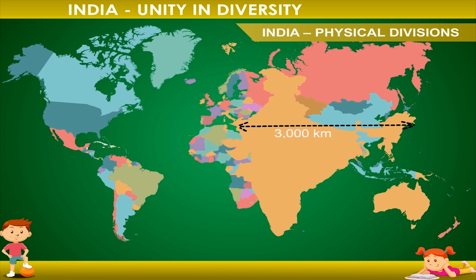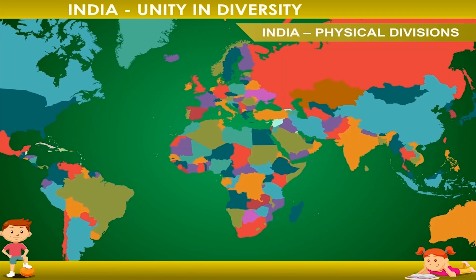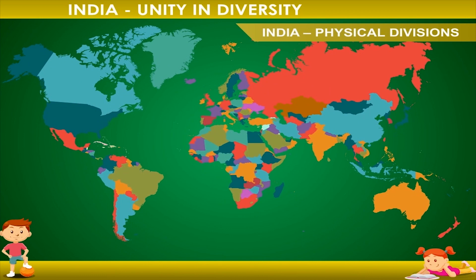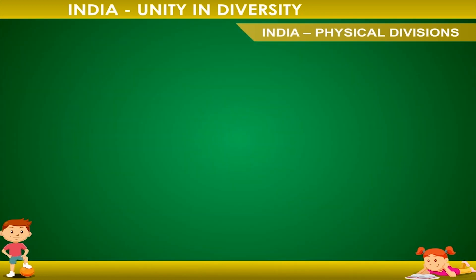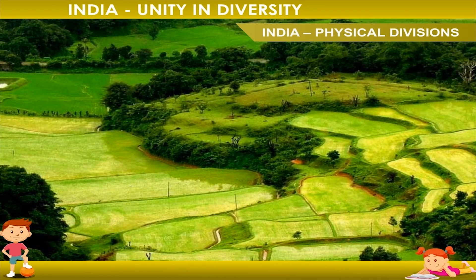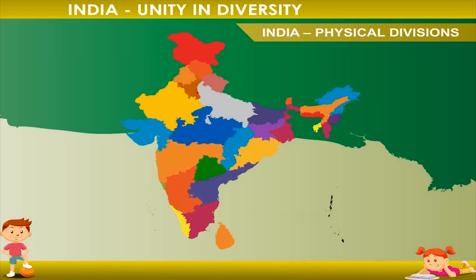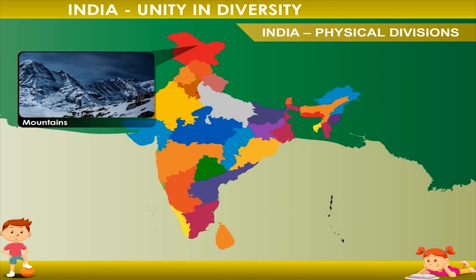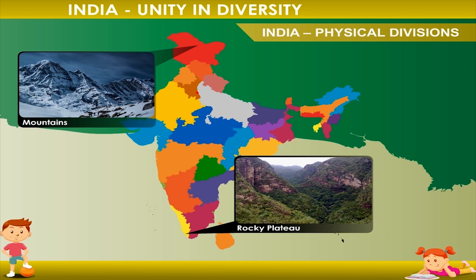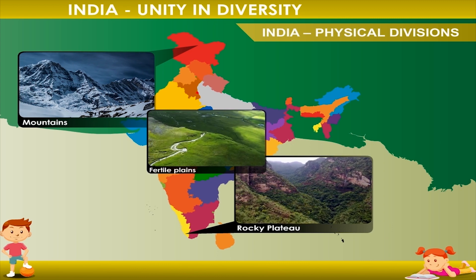India is located in the southern part of Asia, which is the largest continent of the world. The land of our country is not the same everywhere — it varies from place to place. We have high mountains in the north, rocky plateau in the south, and vast fertile plain in the middle.